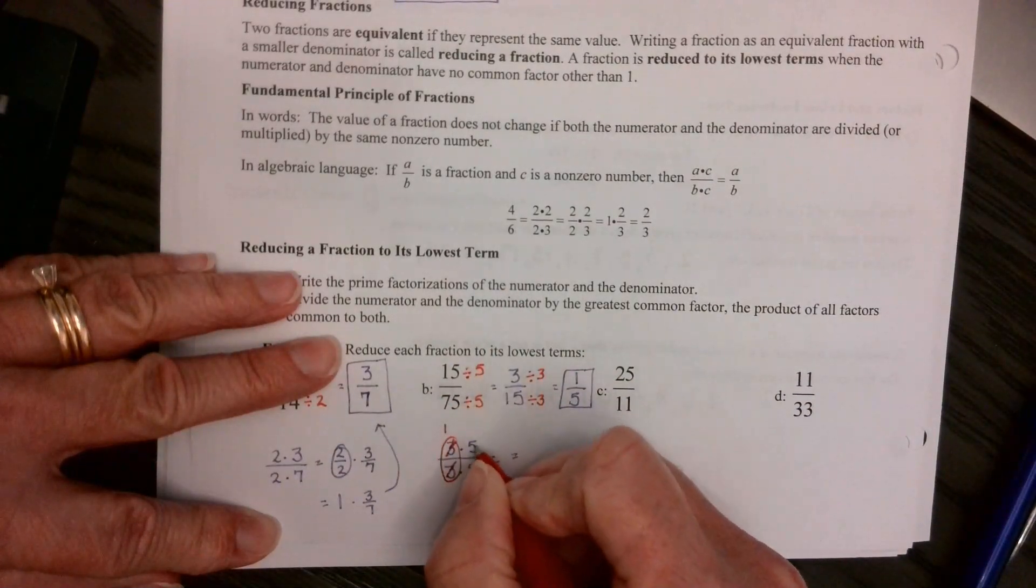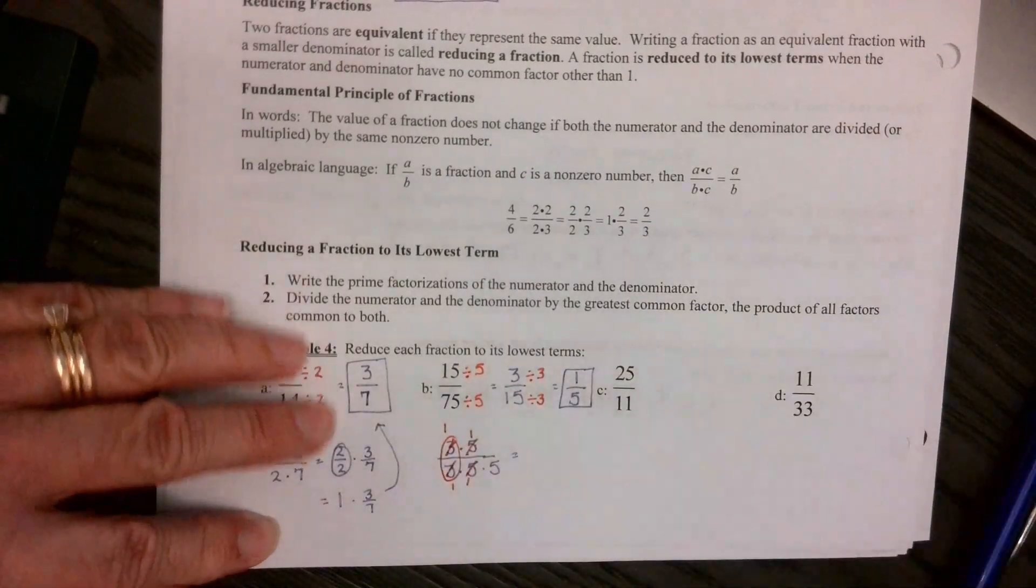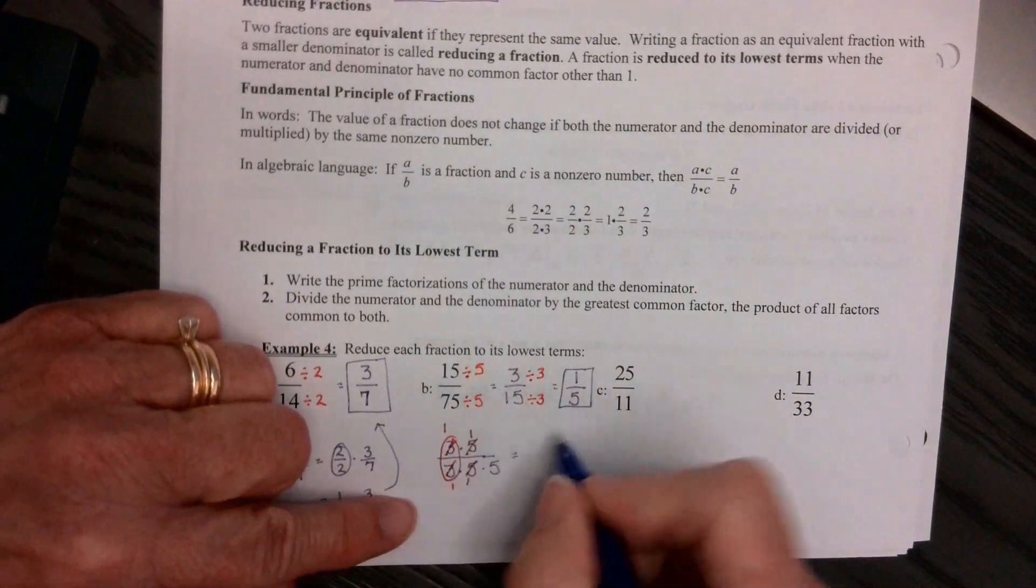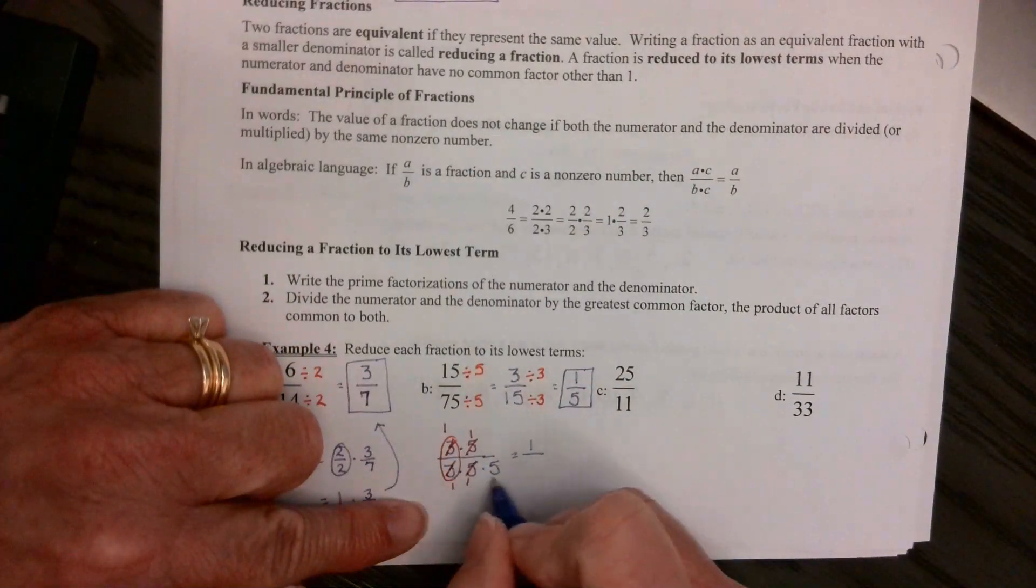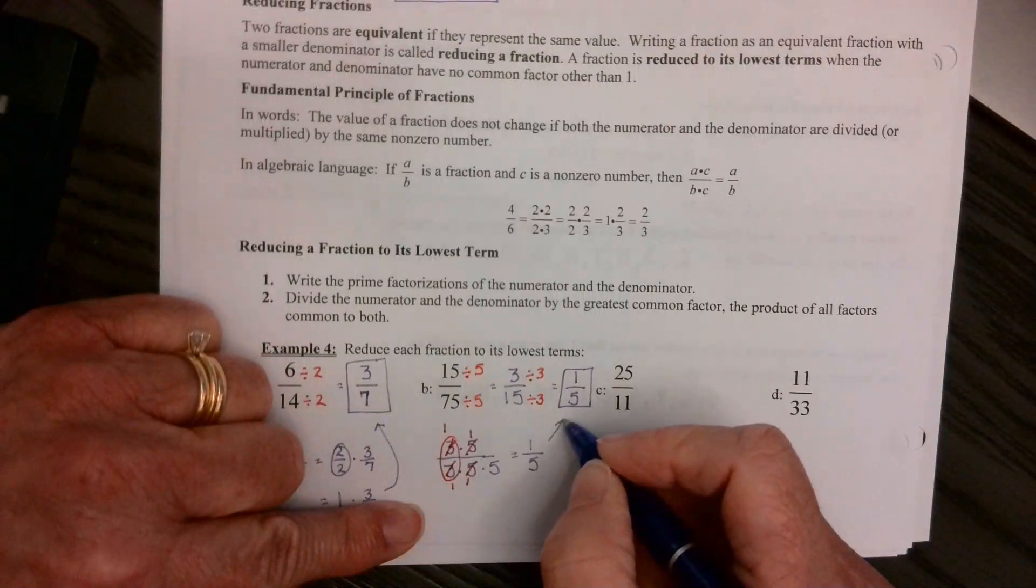And so now on the top we have 1, on the bottom 1 times 1 times 5 is 5. So we still ended up with that.